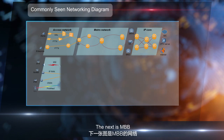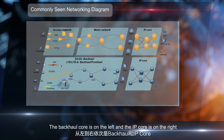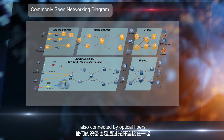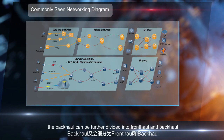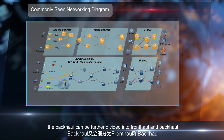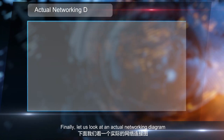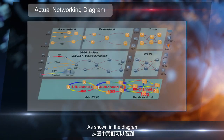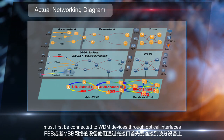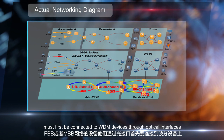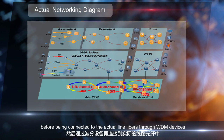The next is MBB. The backhaul core is on the left and the IP core is on the right, also connected by optical fibers. For LTE or LTE-A networks, the backhaul can be further divided into fronthaul and backhaul. Looking at an actual networking diagram, devices on the FBB or MBB network must first be connected to WDM devices through optical interfaces, before being connected to the actual line fibers through WDM devices.